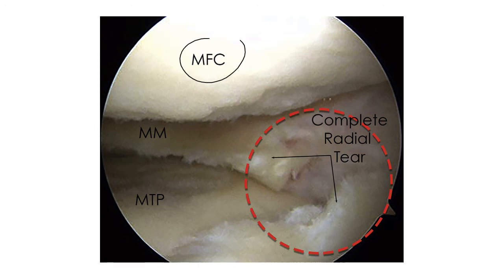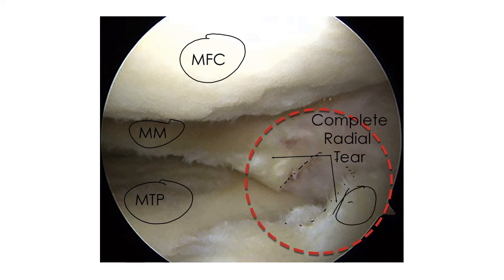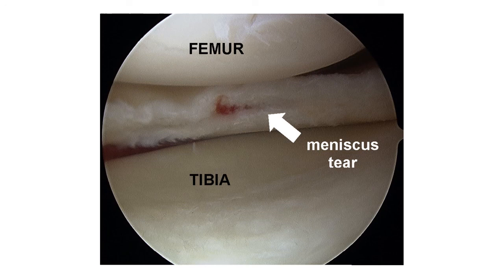Another view: this is the medial femoral condyle, the medial meniscus, and the medial tibial plateau. Here's a complex or complete radial tear — this whole bit all the way through, and this part has been flipped back a little bit, so it's all fuzzy, not nice and smooth. There's a lot of degeneration visible here as well. Nothing's nice and smooth, and the cartilage up here doesn't look great either — this person has had some degeneration for one reason or another. Here's another example of a meniscus tear on the tibia and femur — a horizontal tear.